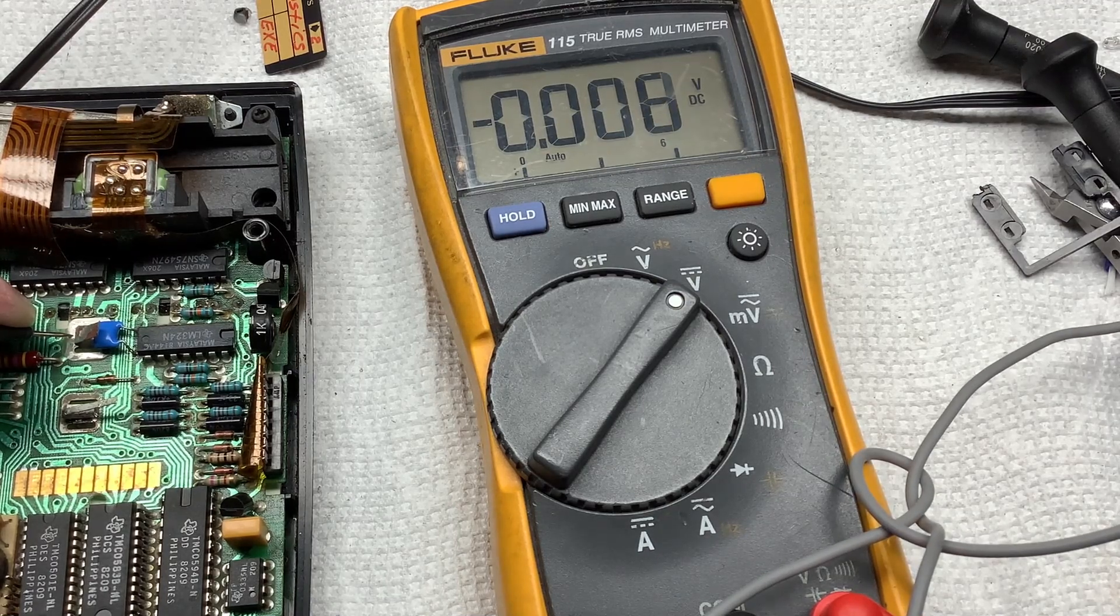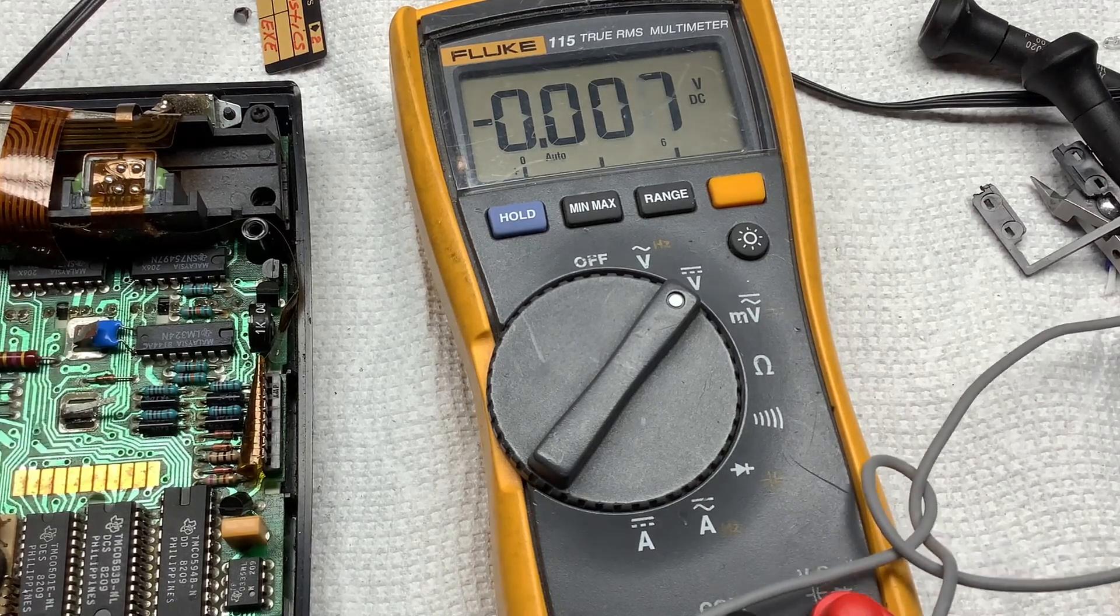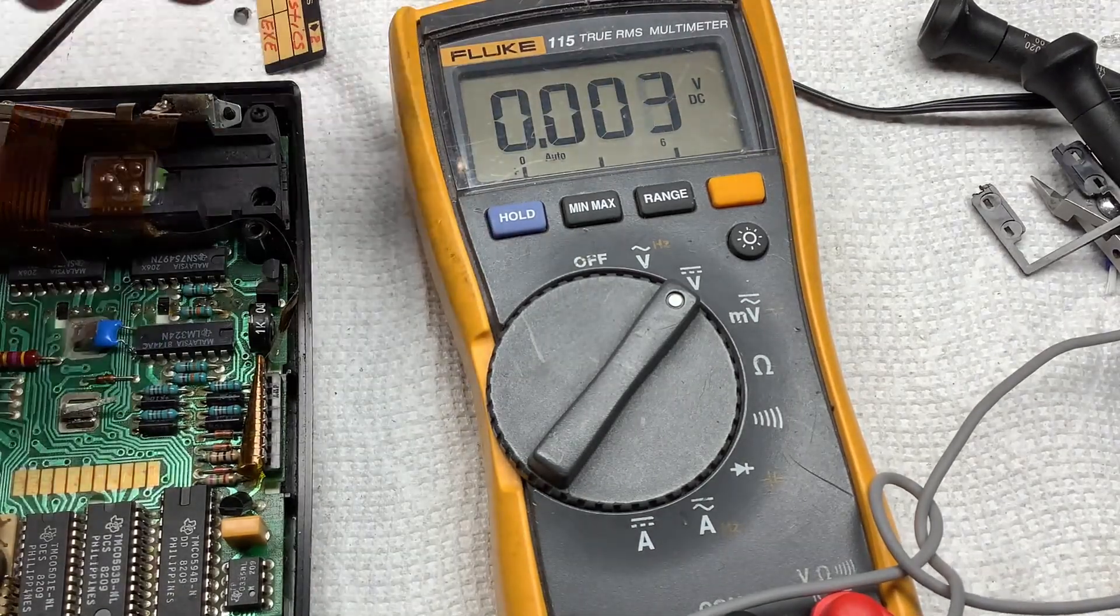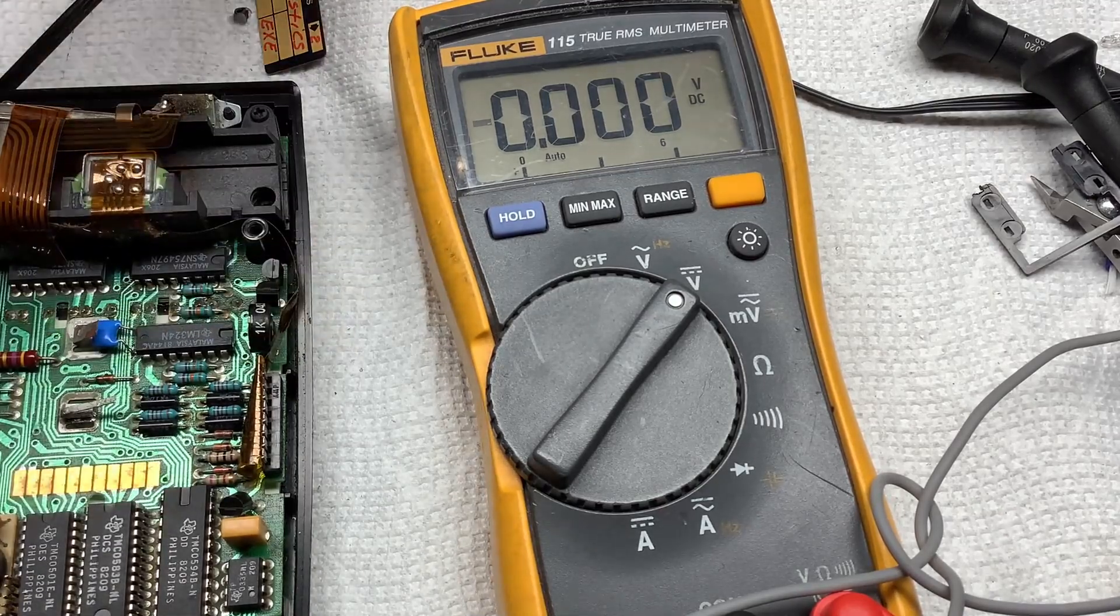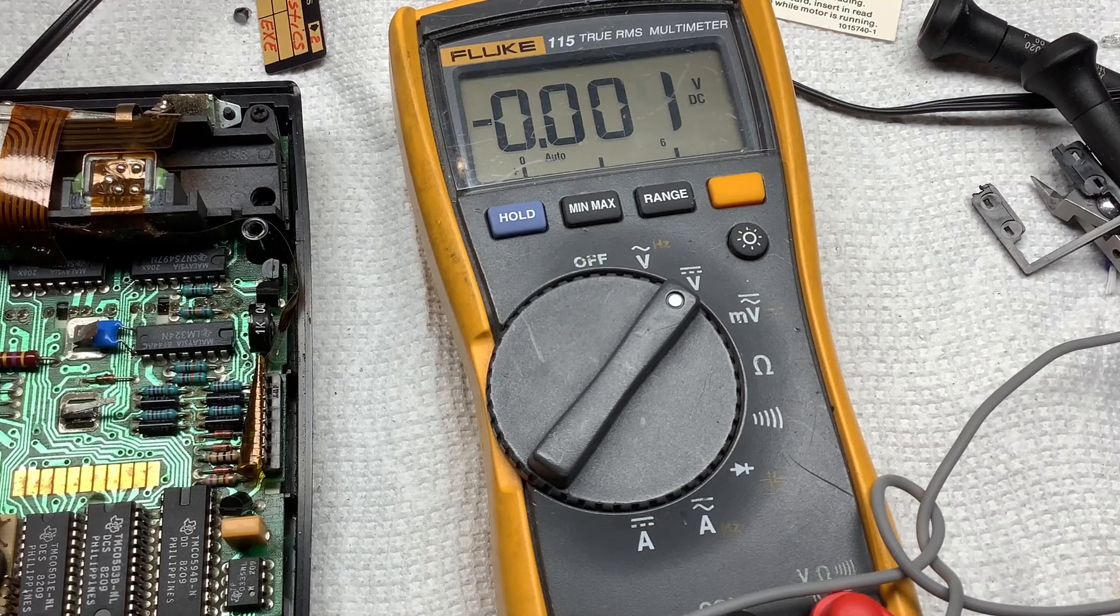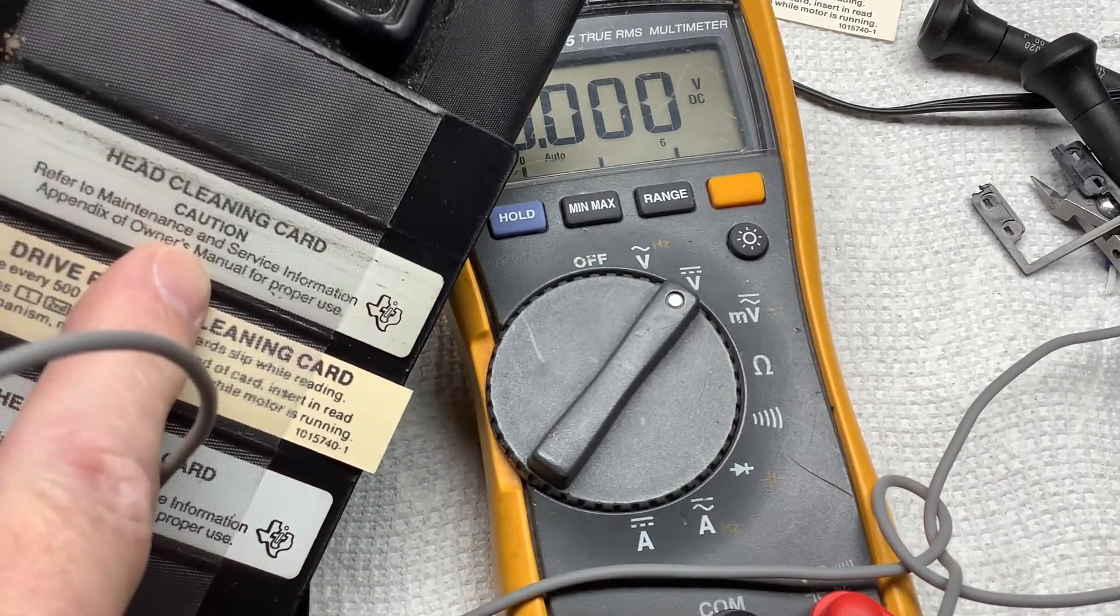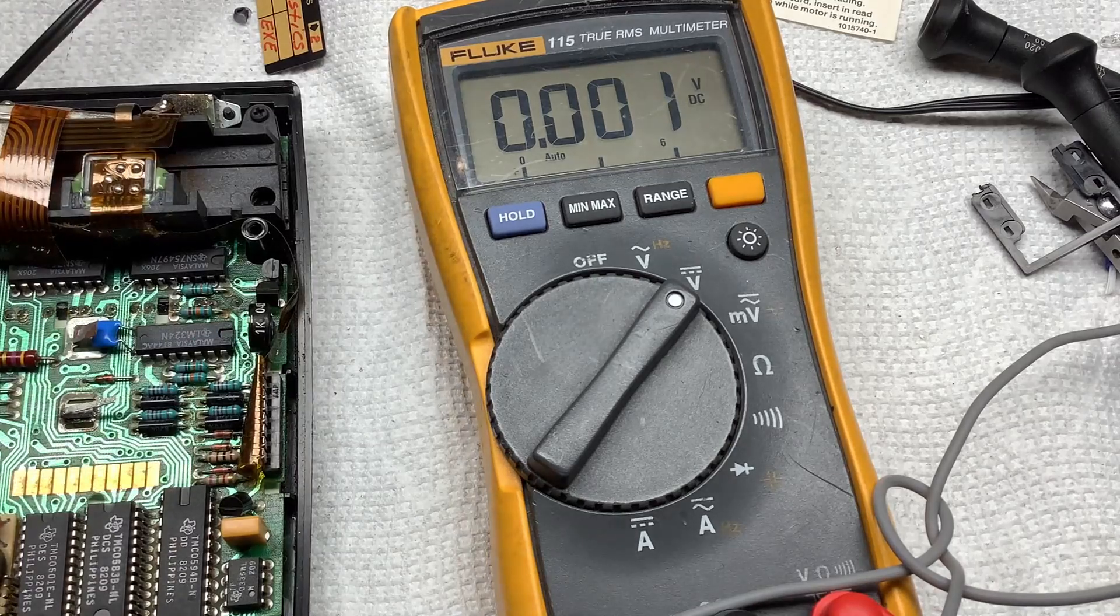So anyway, so if you've got a 59 that's not reading, besides all the normal stuff, you know, what you want to do is you want to clean the roller, you want to use the head cleaning card, right? You know, you want to do all that stuff before you get to this level.